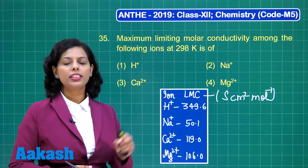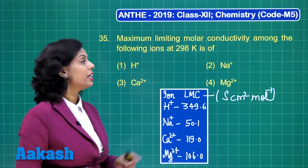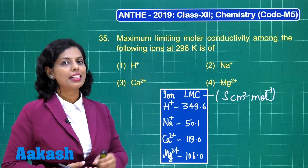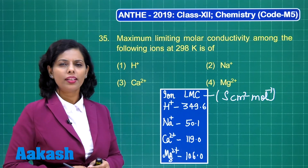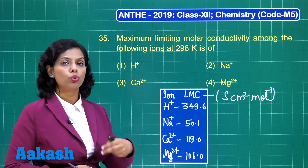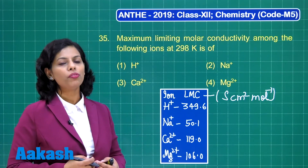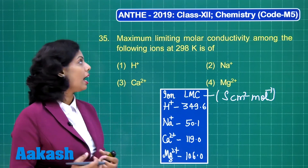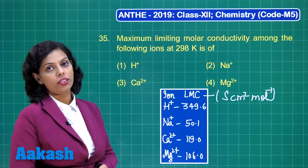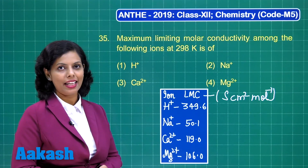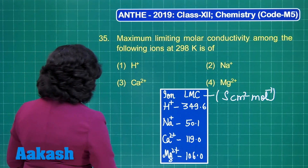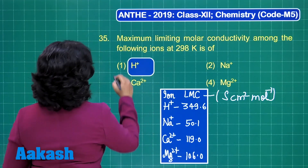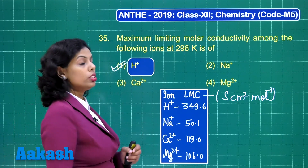What may be the reason? The very simple reason is the small size of H⁺ ion. In aqueous solution, it gets hydrated and forms hydronium ion. That hydronium ion has the nature to join with other water molecules with the help of hydrogen bonding, and due to that it has a very high limiting molar conductivity value — the conductivity increases there. On the basis of this, the correct option is option 1, and that will give you full marks.